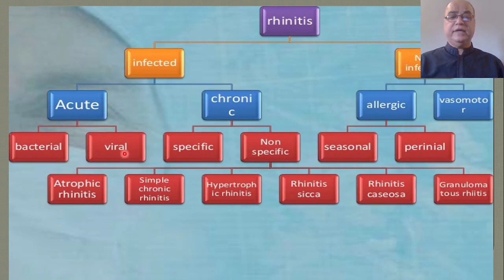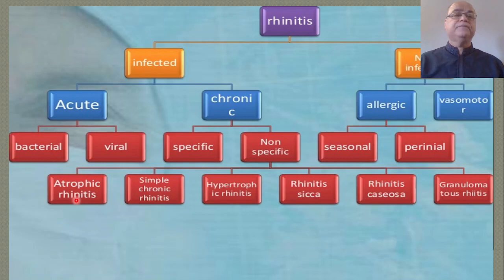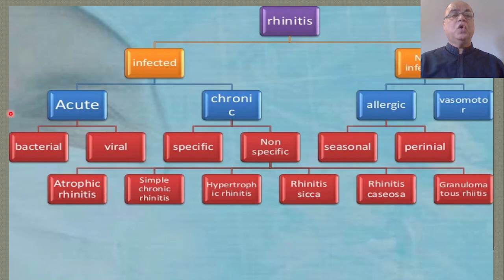Acute rhinitis can be bacterial or viral according to the underlying etiological factors. Chronic rhinitis can be specific and non-specific. Non-specific includes atrophic rhinitis, simple chronic rhinitis, hypertrophic rhinitis, rhinitis sicca, rhinitis caseosa, and granulomatous rhinitis. Today we are focusing on granulomatous rhinitis.